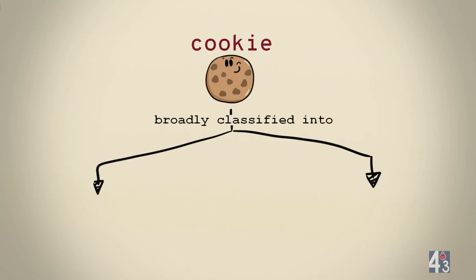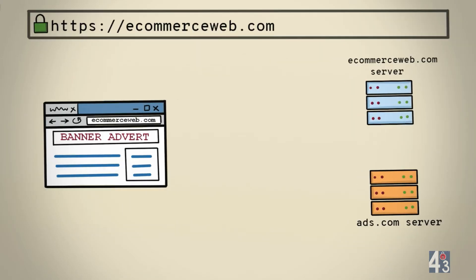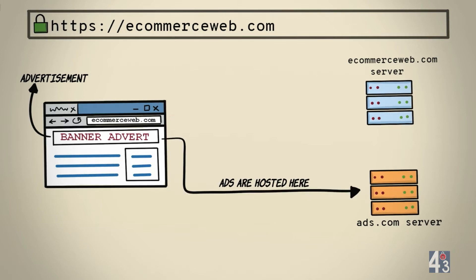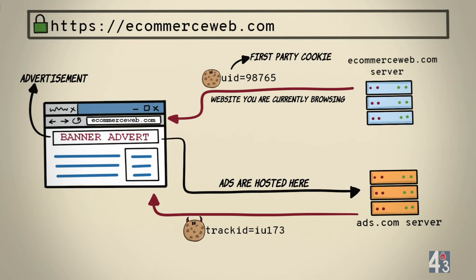Cookies can be broadly classified as first-party and third-party cookies. When you visit a website, let's say ecommerceweb.com, that displays an advertisement, the ad is hosted on another server, let's say ads.com. Cookies set by ecommerceweb.com are first-party cookies since they are set by the same website you're currently browsing. Also, ads.com that serves the ad sets a cookie for you. Since this is a cookie set by another website you're not directly browsing, the cookie set by the ad server is a third-party cookie.